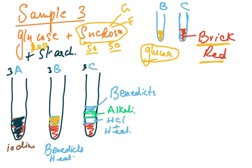Because test tube 3C now has more reducing sugar, the Benedict's solution will produce a darker color compared to test tube 3B. The procedure for 3C is: add HCl, heat to hydrolyze the sucrose, add alkali to neutralize, then add Benedict's solution and heat — the resulting color will be a darker shade, confirming more reducing sugar is present.